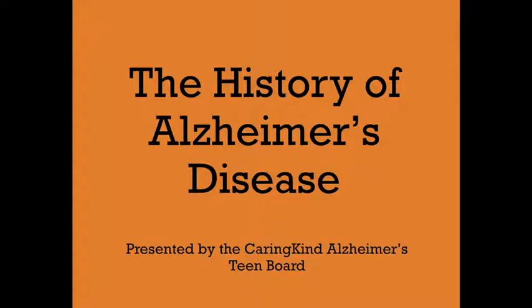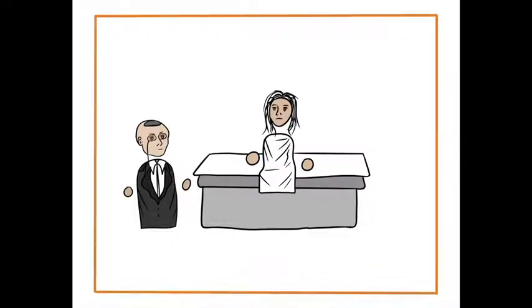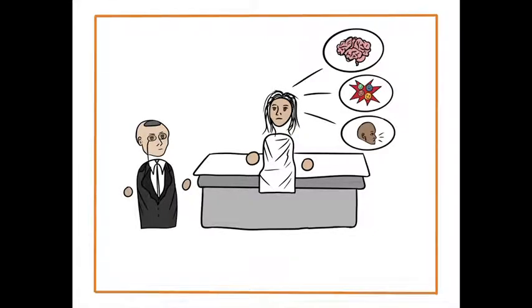The term Alzheimer's disease has been used for over 100 years. In 1906, German doctor Alois Alzheimer observed and documented severe neurological changes, including memory loss, erratic behavior, and difficulty speaking, in Auguste Deter, one of his patients.